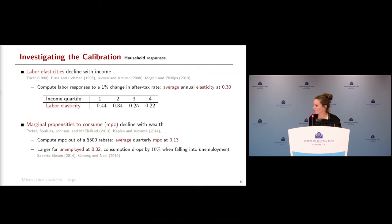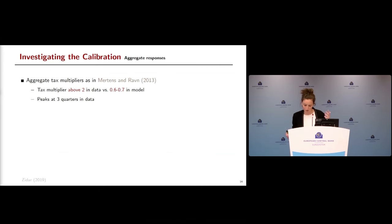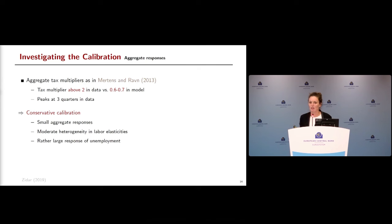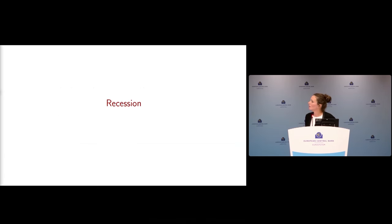We also check how the model responds to tax cuts using evidence from Mertens and Ravn, who find that when the government loses one dollar of fiscal revenue from personal income tax cuts, output increases by more than two dollars — a multiplier above two. In our model, replicating this exercise yields multipliers of 0.6 to 0.7, which is smaller than the data. This confirms our calibration is conservative: we get smaller aggregate responses to tax cuts, moderate labor elasticities, and a large unemployment response — yet we still find the tax credit package is the most effective stabilization tool.